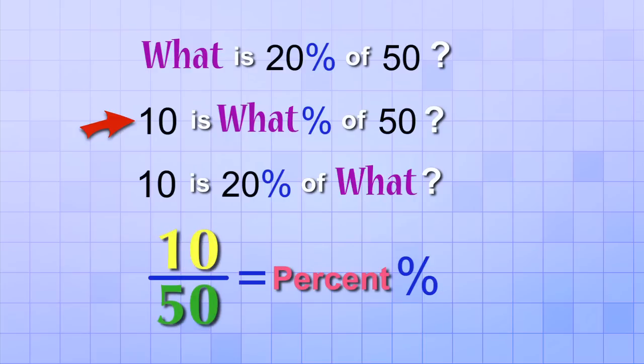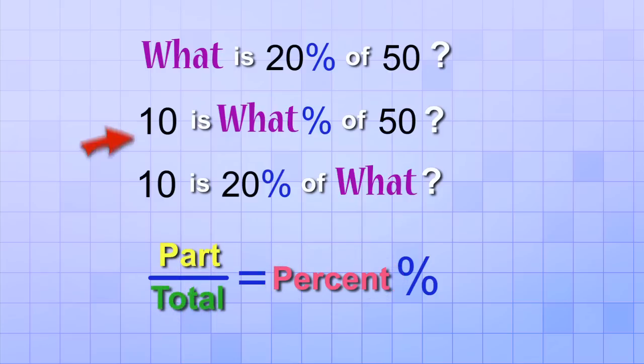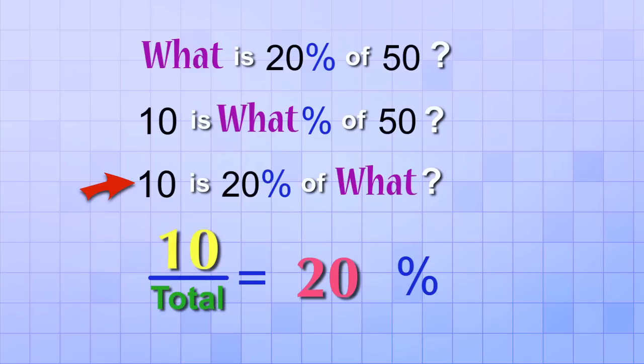In this type of problem, we know both the total, and we know what part of the total we have, but we need to figure out what percentage of the total that part is. We need to find what percent is it. And the third type of problem is what we'll learn in the next video. For that type of problem, we know what part we have, and we know what percent of the total it is, we just don't know the total itself.